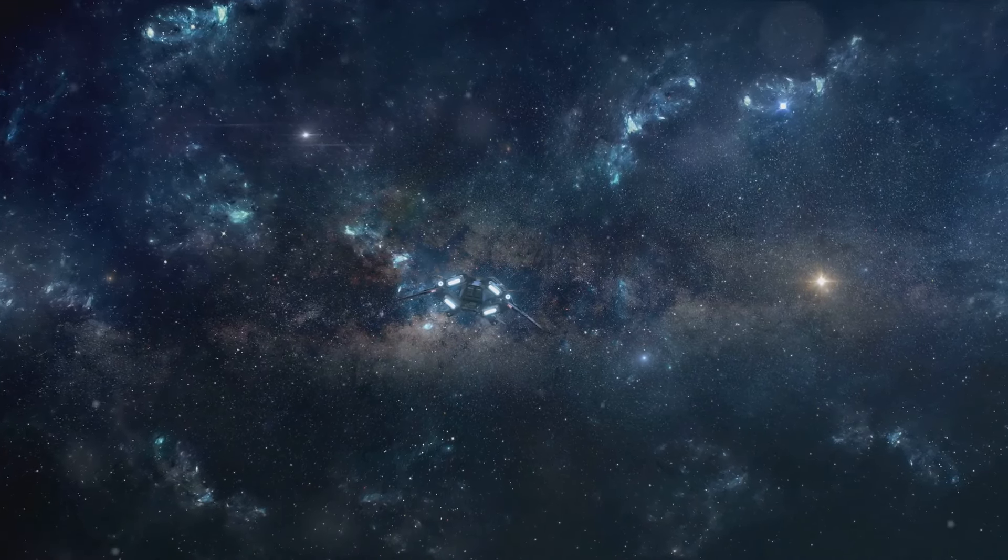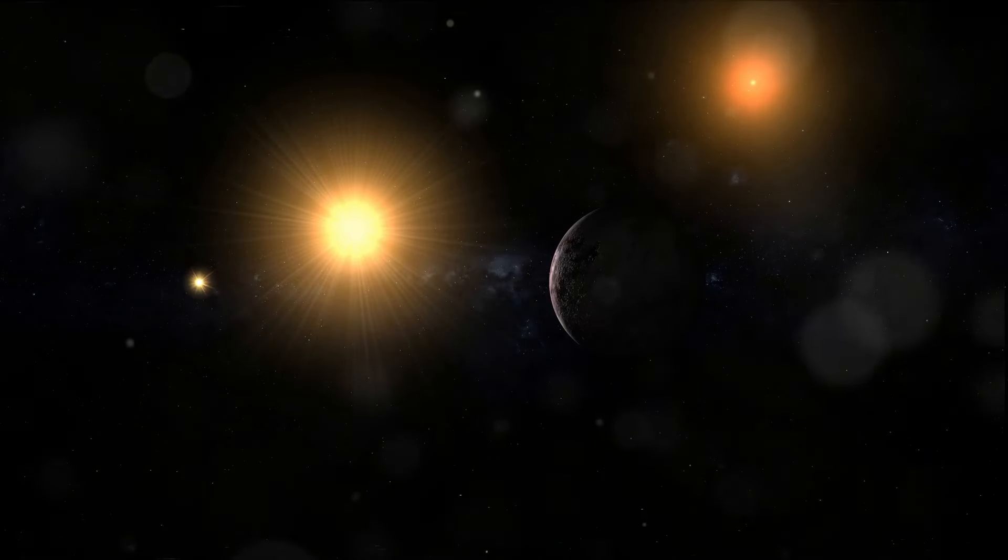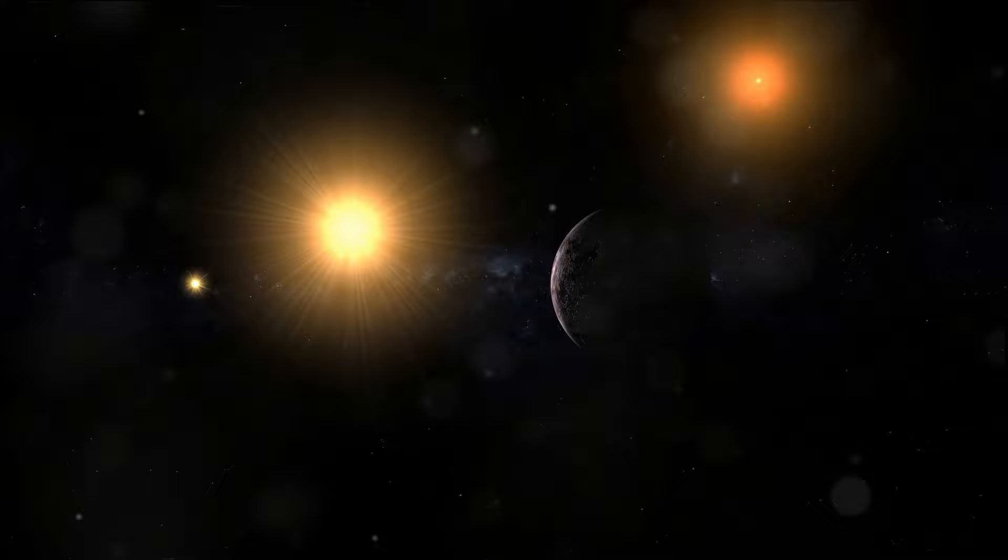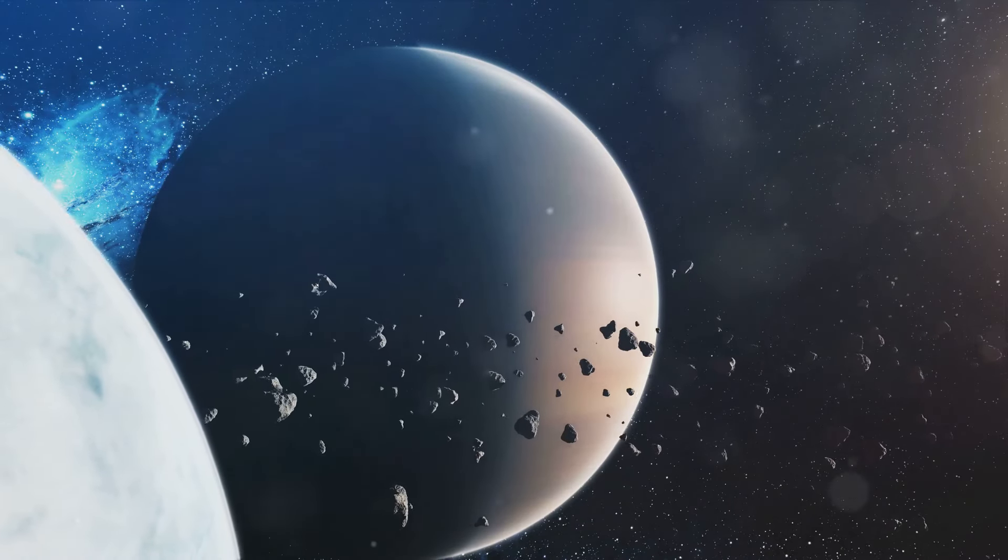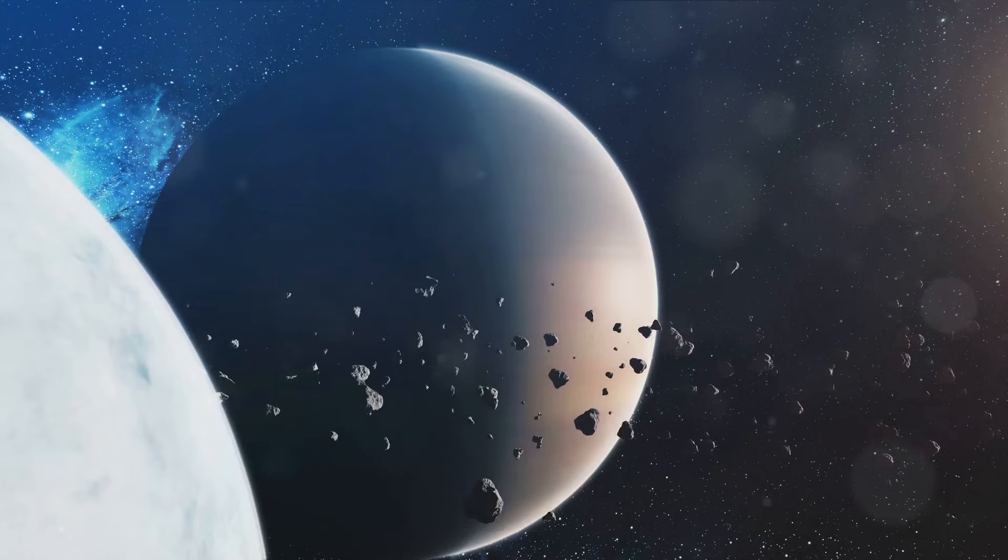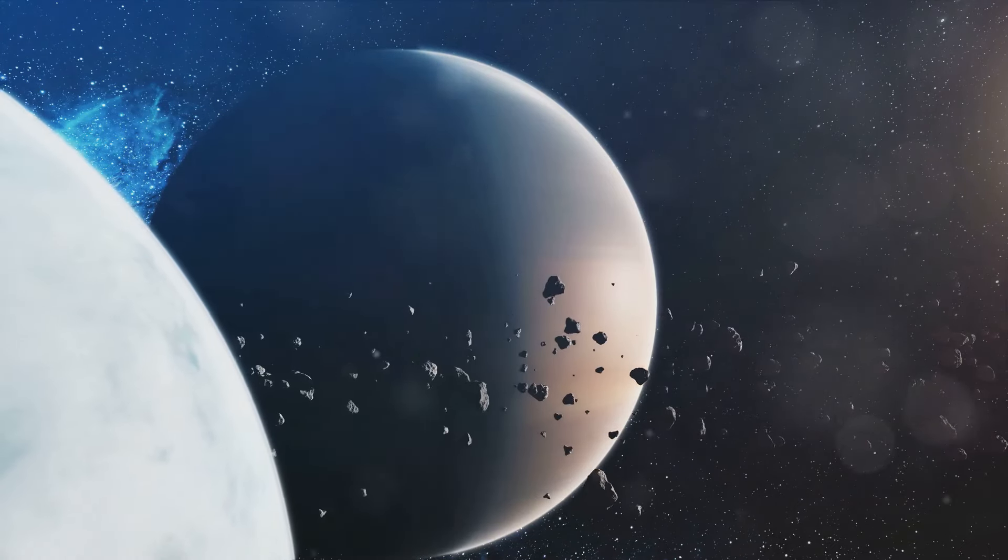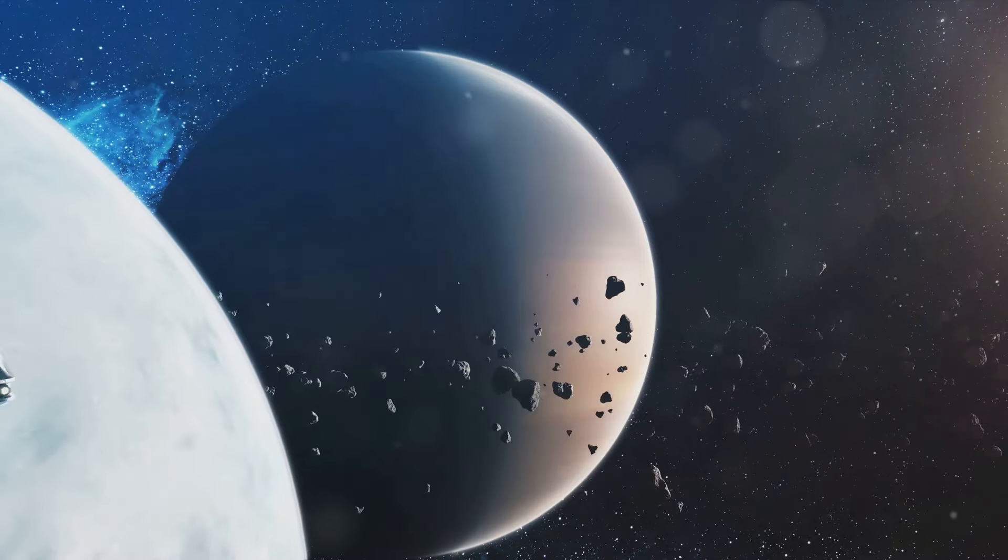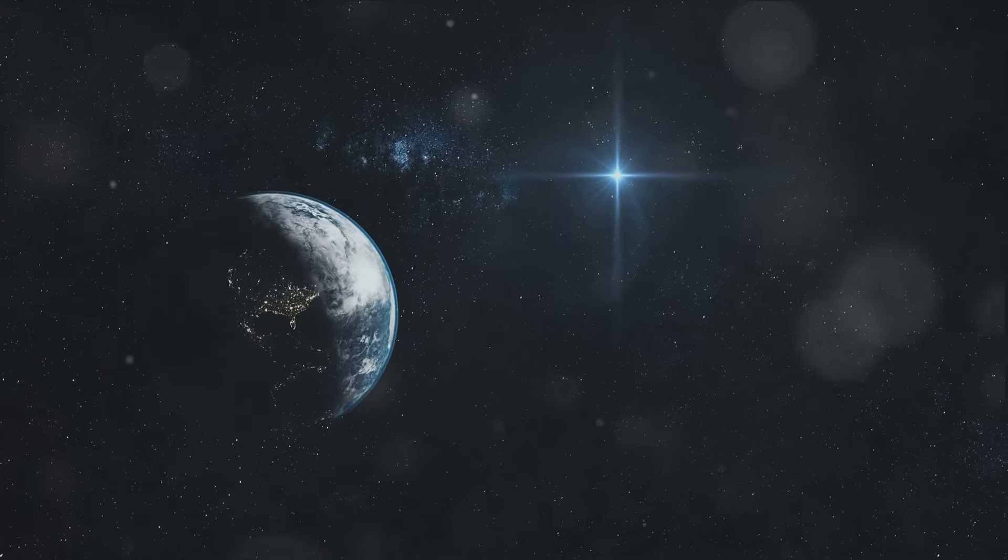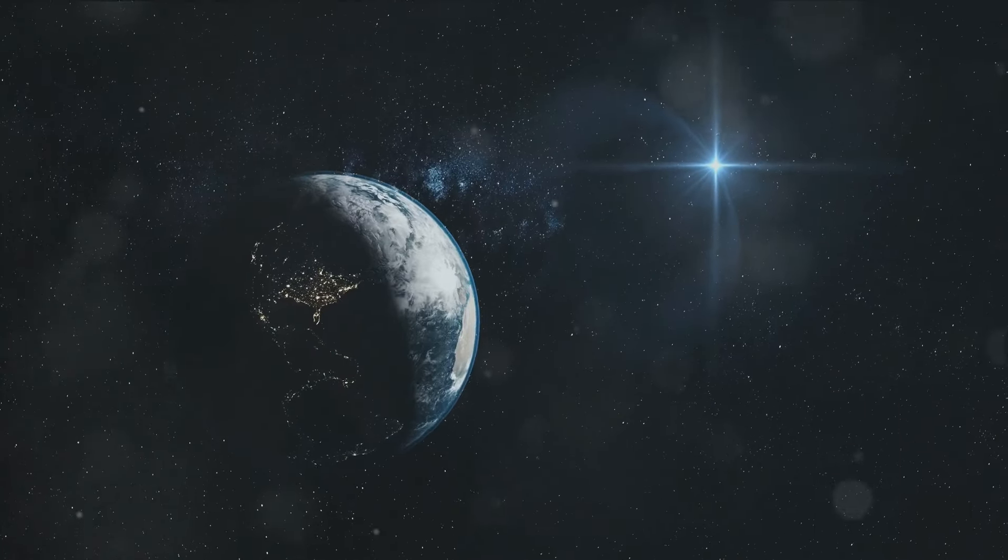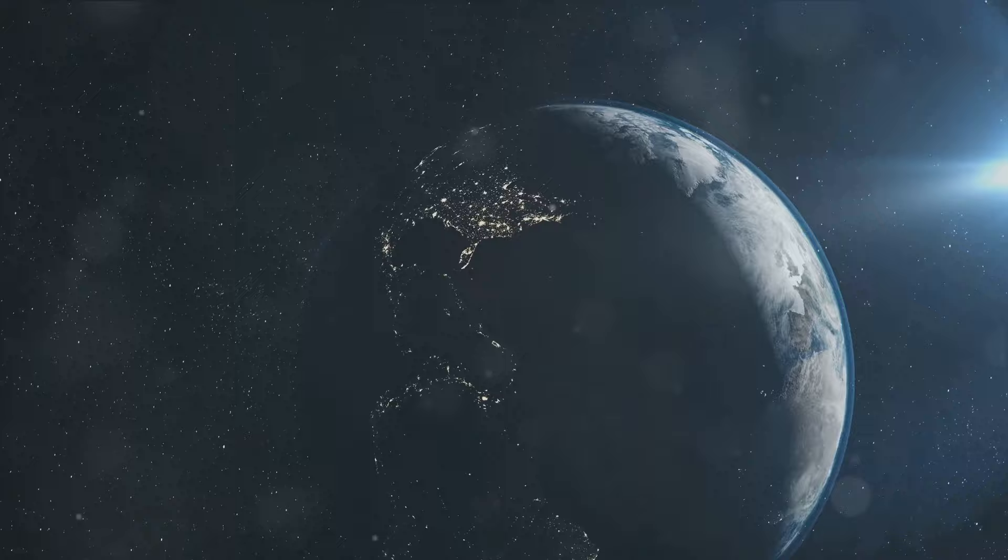Perched on the edge of our cosmic neighborhood resides Proxima Centauri b, our nearest known exoplanet. Nestled comfortably within the habitable zone of the Proxima Centauri system, this celestial sphere is a mere 4.2 light-years from our home planet. This proximity further amplifies our curiosity and fascination, drawing us towards the prospect of exploring this celestial neighbor.